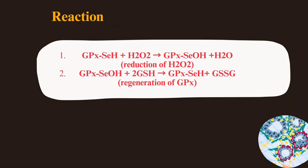In the first reaction, the glutathione peroxidase selenol complex reacts with hydrogen peroxide, converting the selenol into selenohydroxide and producing water. In the next step, regeneration of glutathione peroxidase occurs: the selenohydroxide complex reacts with glutathione, converting it back to the selenol form, while glutathione becomes oxidized.